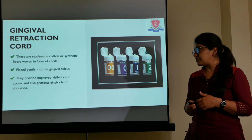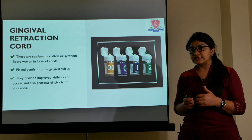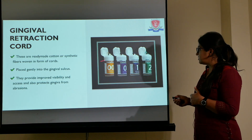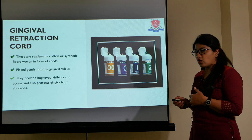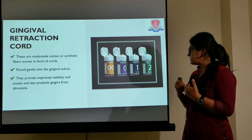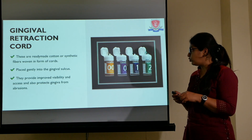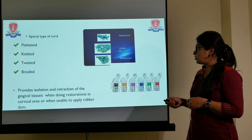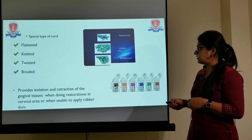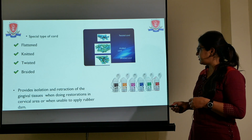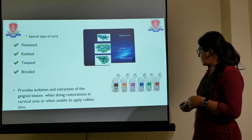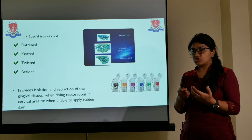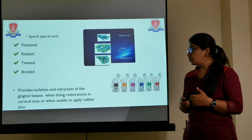Then gingival retraction cord — sometimes you also require to retract the gingiva, like for impression-making procedures. These cords can be used as plain cords or impregnated — impregnated means they are dipped into some kind of solution like a vasoconstrictor solution. They are available in different types: flattened, knitted, twisted, and braided, and they are color coded so that you can identify which type of cord has to be used for which tooth.